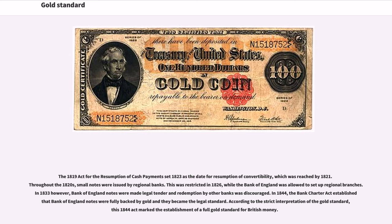The 1819 Act for the resumption of cash payments set 1823 as the date for resumption of convertibility, which was reached by 1821. Throughout the 1820s, small notes were issued by regional banks, restricted in 1826, while the Bank of England was allowed to set up regional branches. In 1833, Bank of England notes were made legal tender. In 1844, the Bank Charter Act established that Bank of England notes were fully backed by gold and became the legal standard, marking the establishment of a full gold standard for British money.